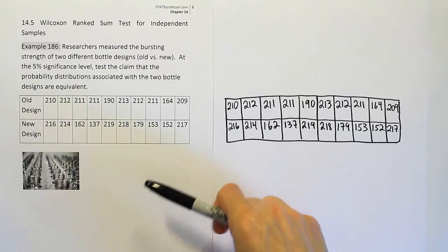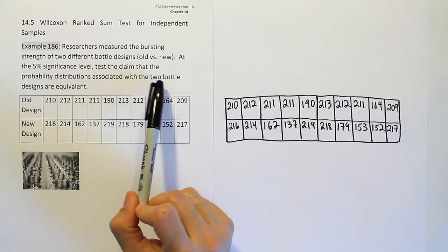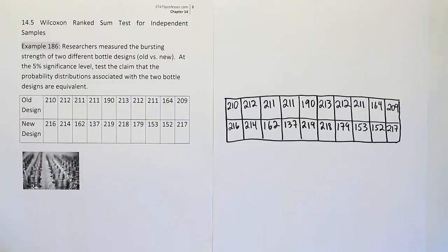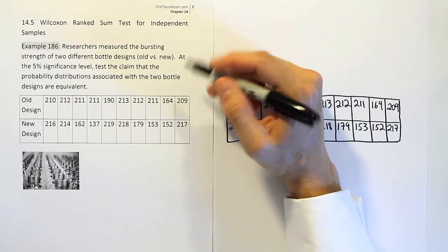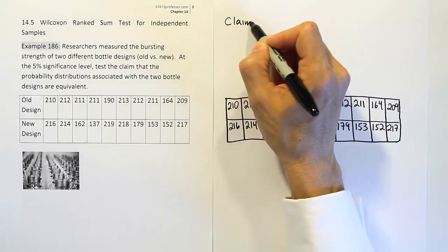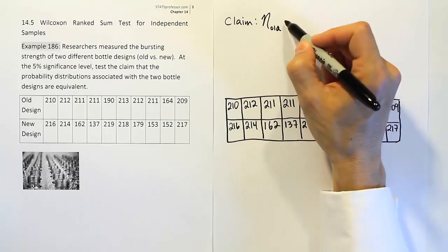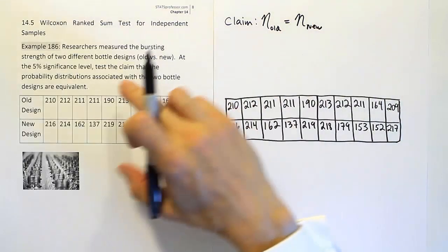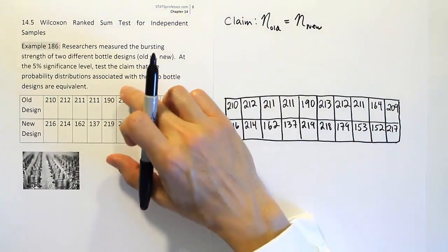In the notes, the claim is that the probability distributions associated with the two bottle designs are equivalent. If probability distributions are equivalent, what they're getting at is that they have the same central tendency — the same location on the number line — and also the same variation or spread. We could express the claim more narrowly by talking about the medians: the median for the old bottles should equal the median of the new bottles. If the distributions are equivalent, the medians would be in the same location.